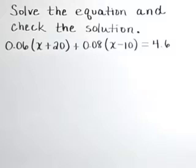Solve the equation and check the solution. 0.06 times the quantity x plus 20 plus 0.08 times the quantity x minus 10 is equal to 4.6.